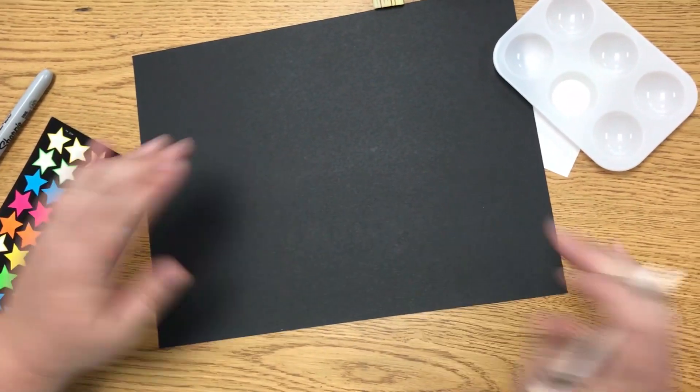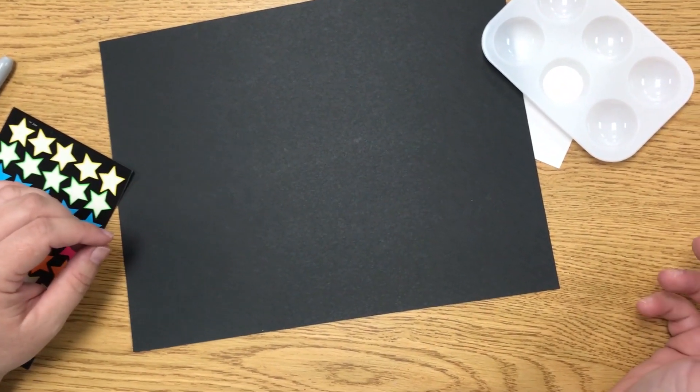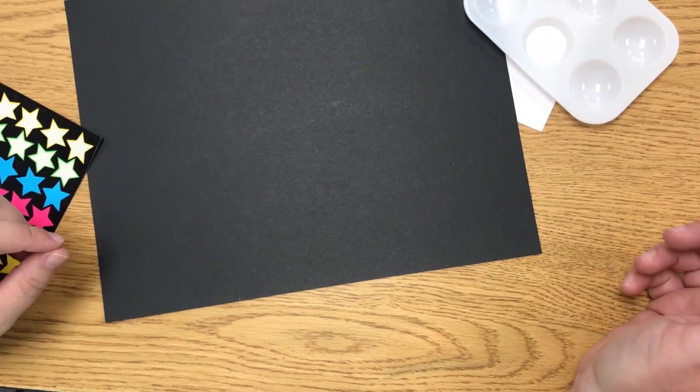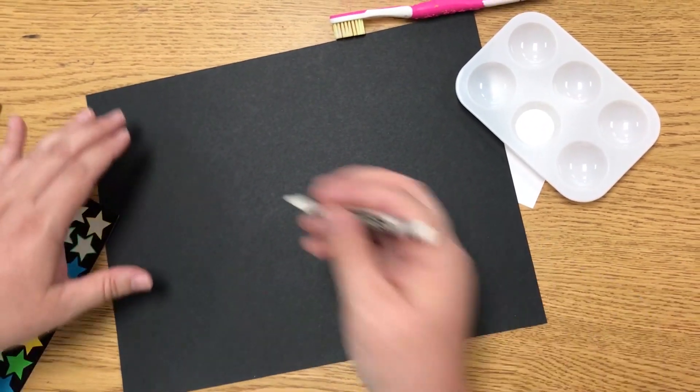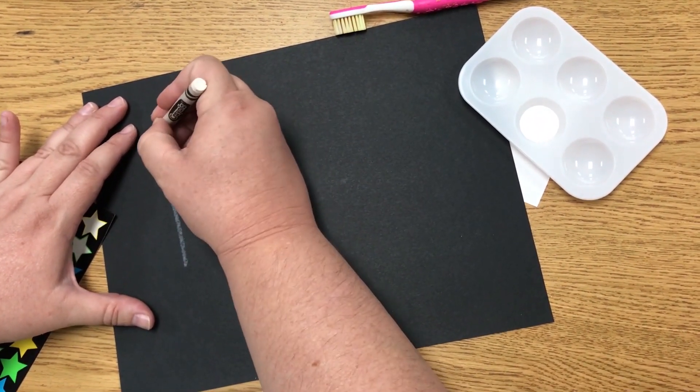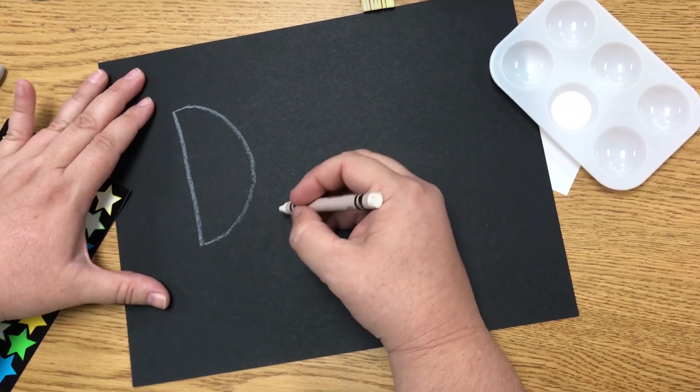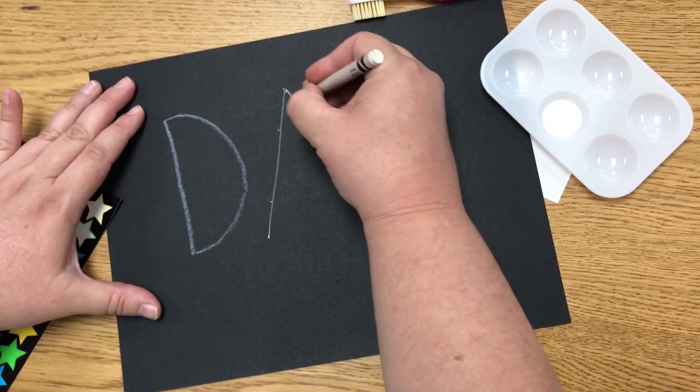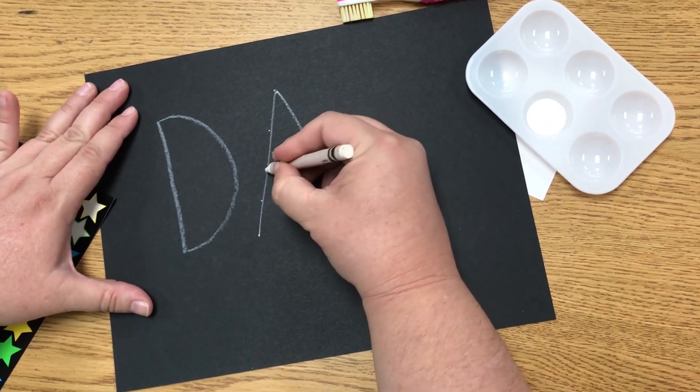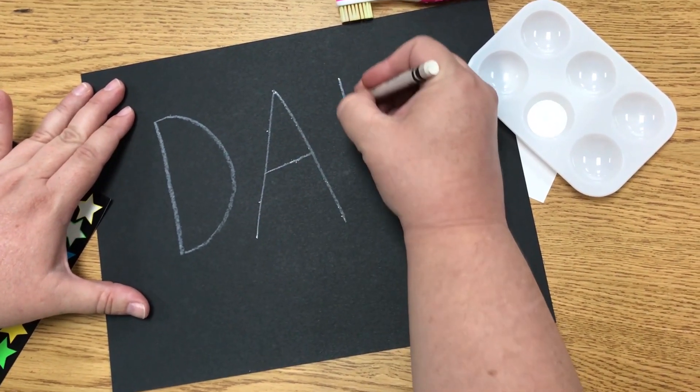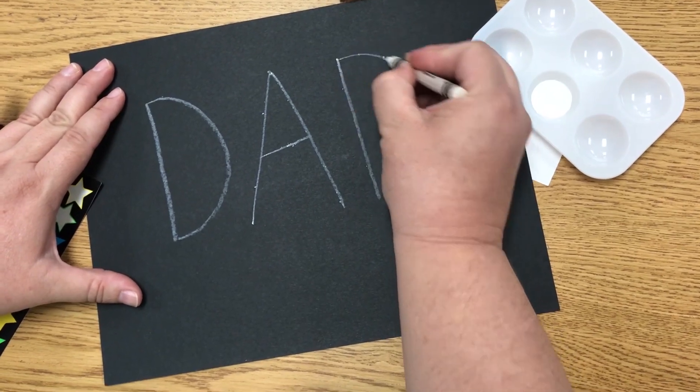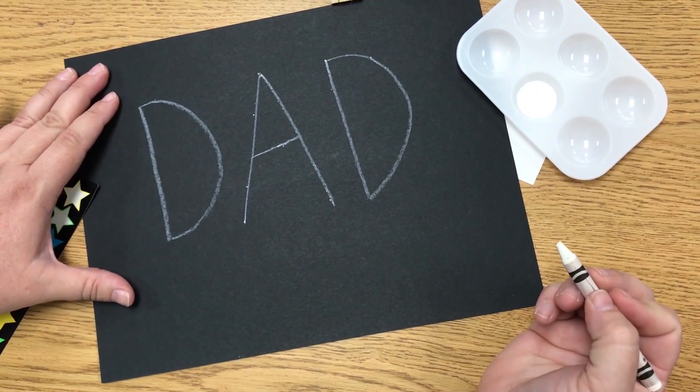We're going to start with our black piece of paper and make this look like a constellation in the night sky. I'm going to start by writing dad or daddy or father or papa or whatever you call your dad. I'm going to write that in big huge letters in my sky. I'm writing with a white crayon or white colored pencil so that it shows up really well on my black paper.